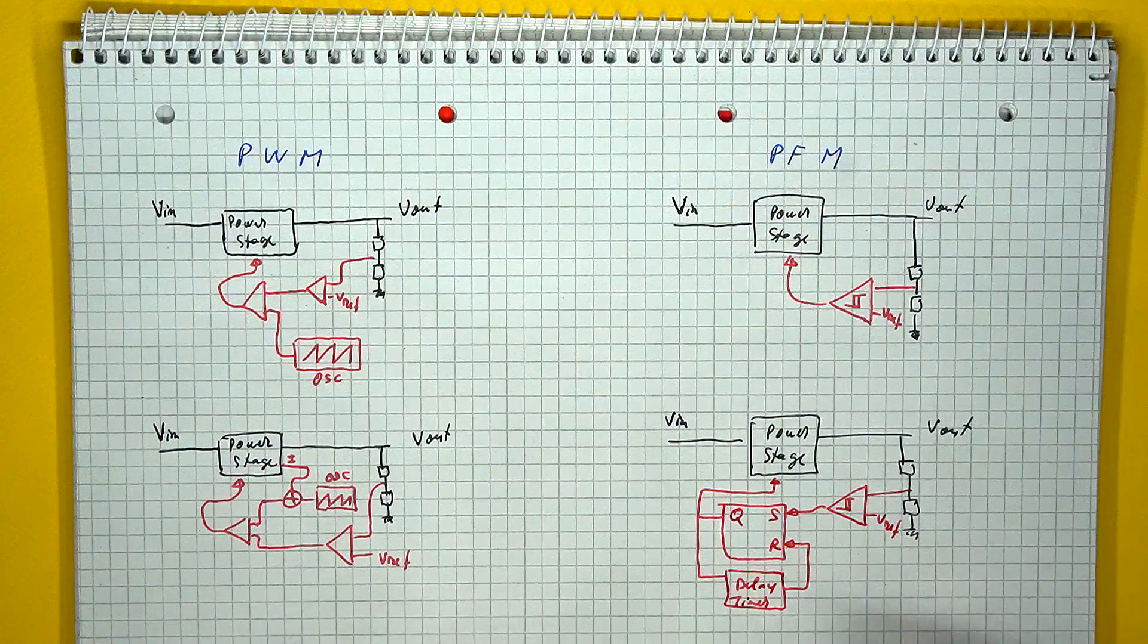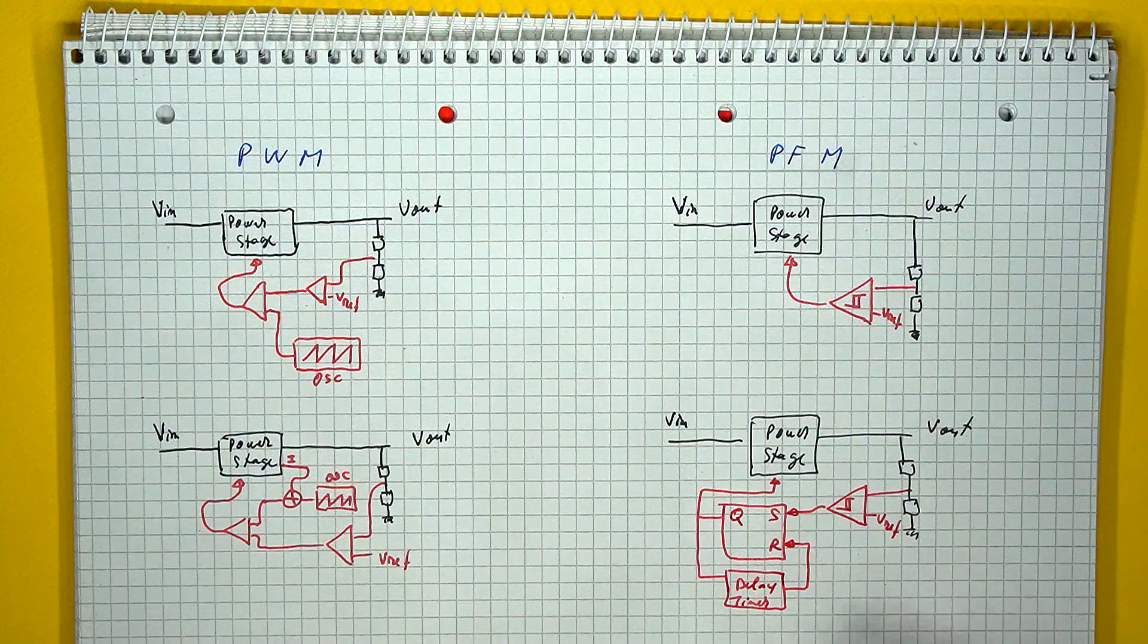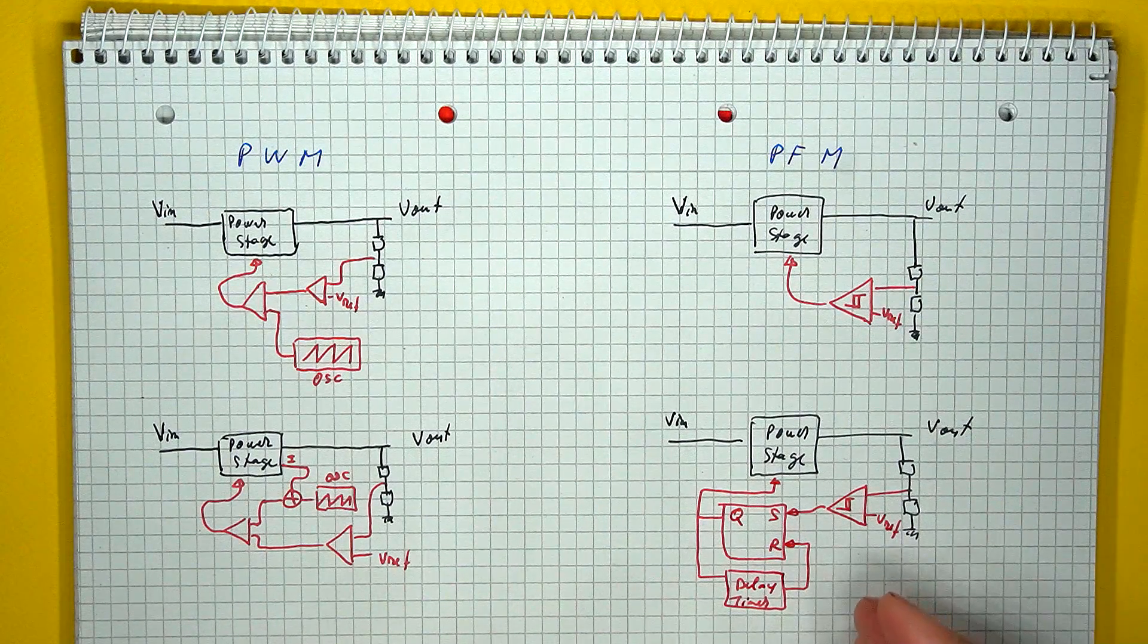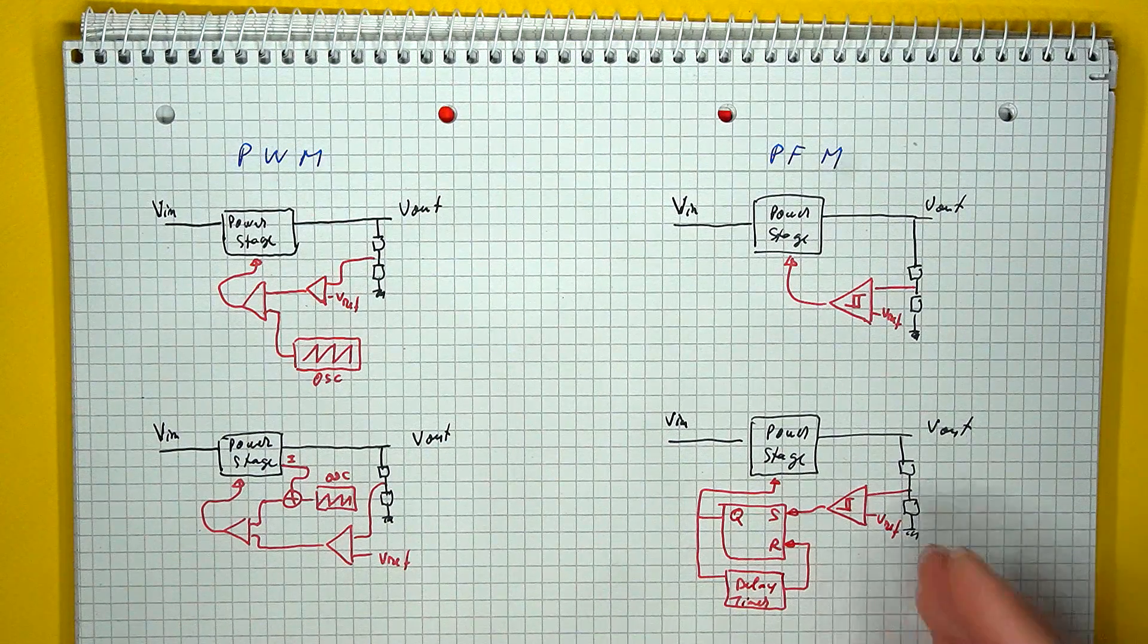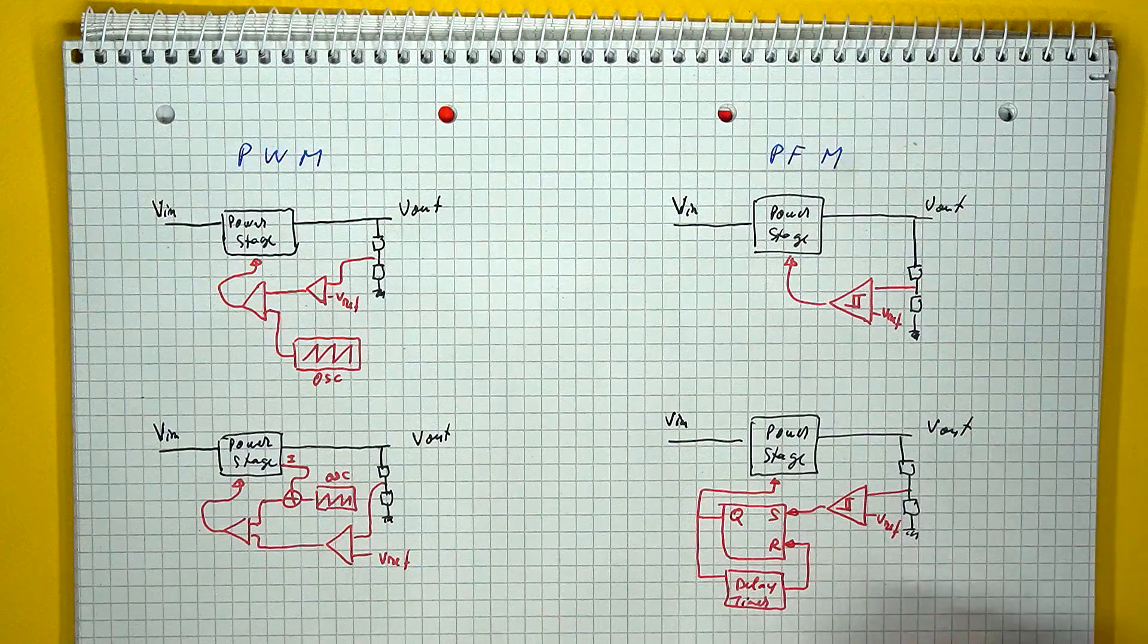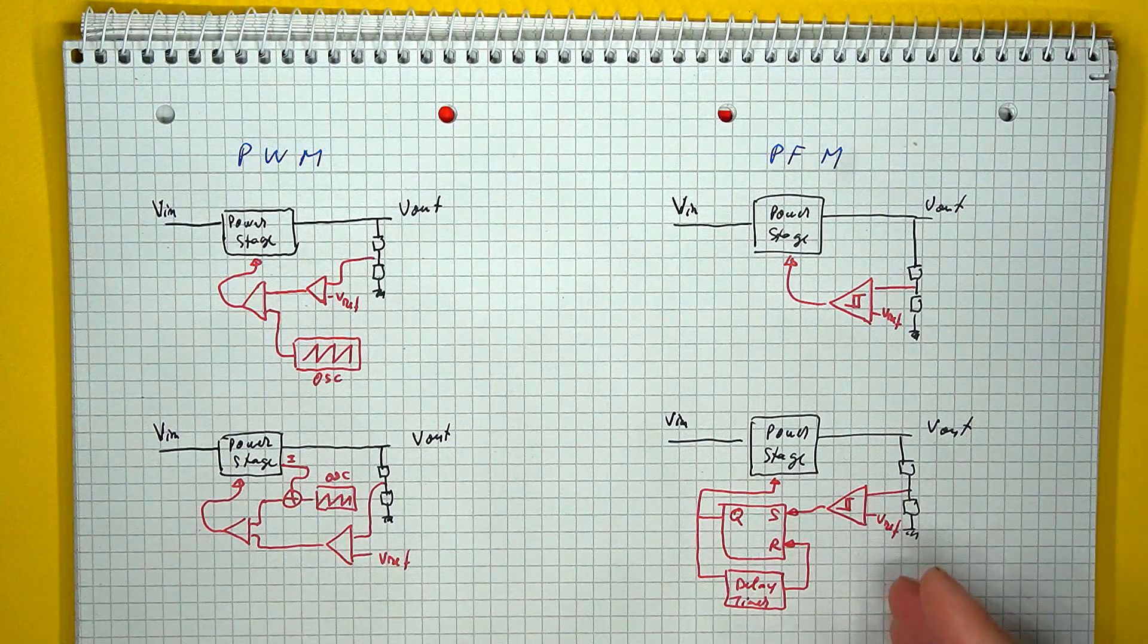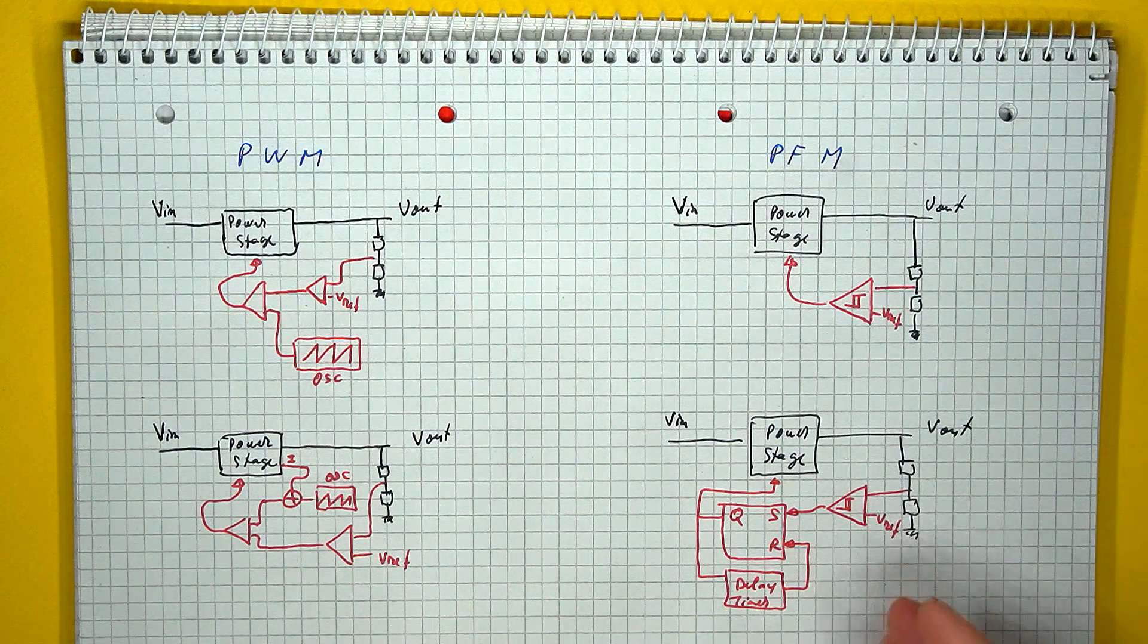The main drawback here is that you can't really build all converter types using this method, so this thing will mainly work for buck regulators. A more controlled approach to actually achieve proper pulse frequency modulation can be done using one-shot timers or delay timers. So these will either force the on or off time to a fixed value, and then the other timing is determined by the feedback loop. This allows a more predictable response, as well as allowing the construction of all the power topologies. So this way, you will actually have pulse frequency modulation, in the sense that one of the timings is kept more or less constant.